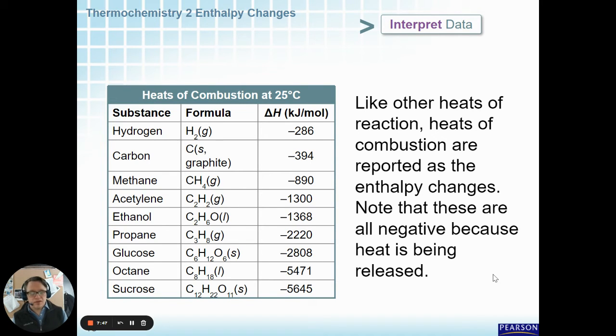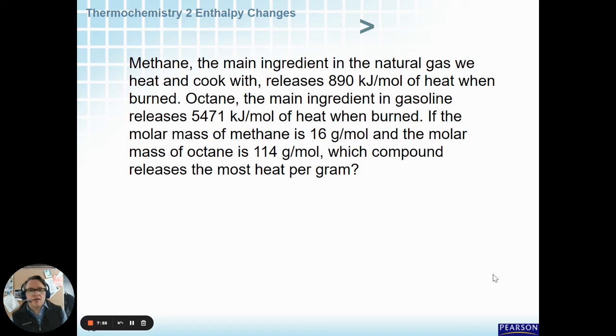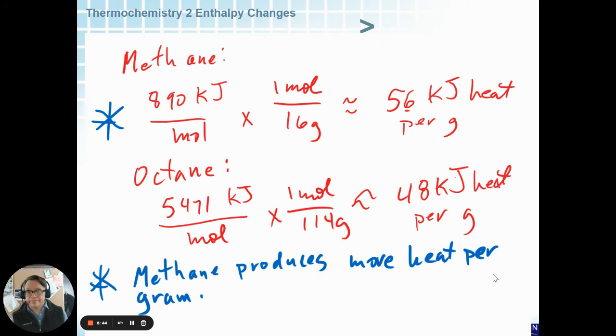Here's an example of a list of heats of combustion for different substances. Methane is the main ingredient in the gas that we cook with. Octane is one of the names of the main ingredient in gasoline. They have two different heats of combustion. And so, they also have two different molar masses. We can use the molar masses and the kilojoules per mole to figure out which one releases the most heat per gram. Why don't you try to pause the video and see if you can think of how you might calculate that. Give it a shot. I'm waiting.